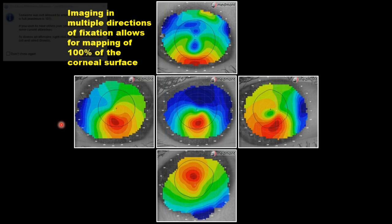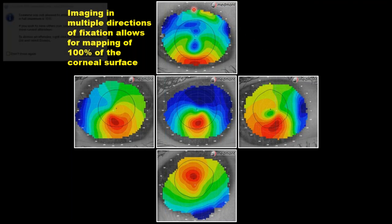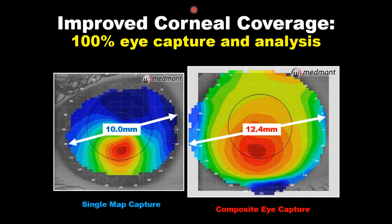All of those different fixations can be converted into a colorized topography and analyzed so that we have all of this information out at the peripheral cornea and limbus. Toda esa información, una vez captada, puede ser unida y creada para un mapa especial donde tengamos toda la información central y la periférica superior e inferior.